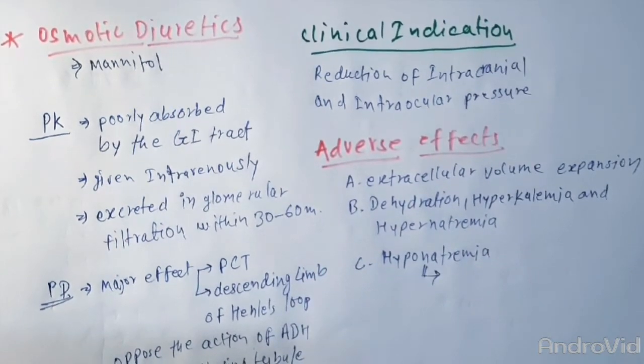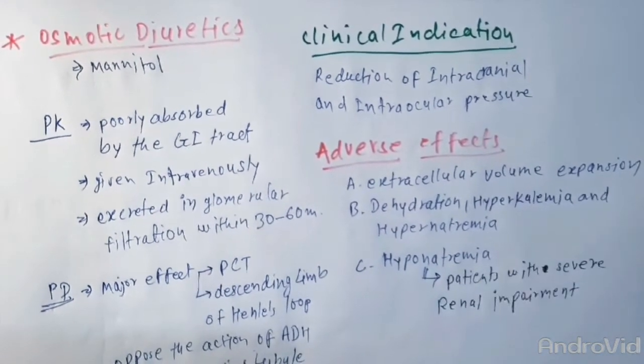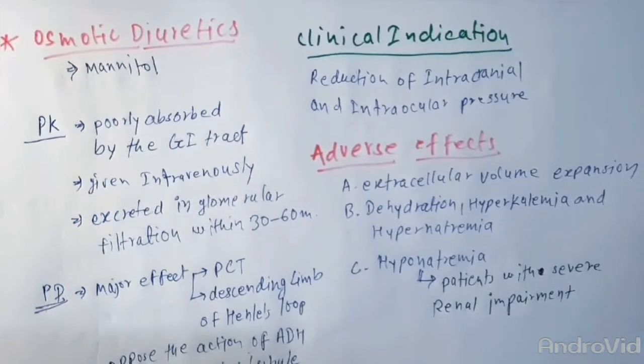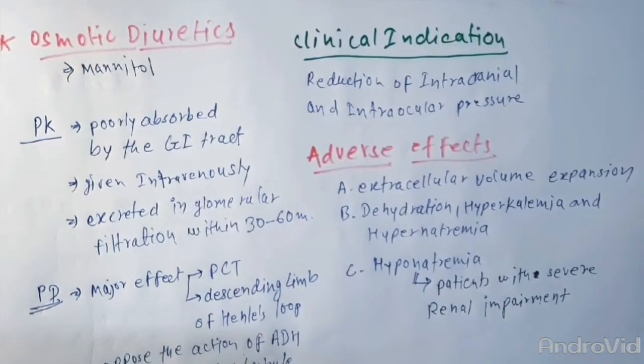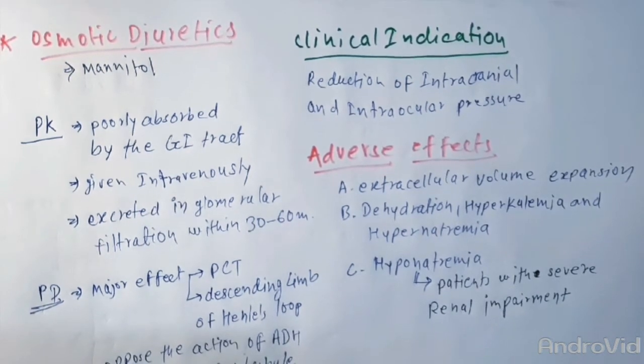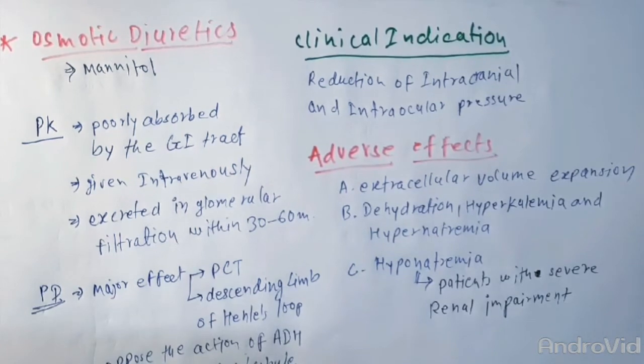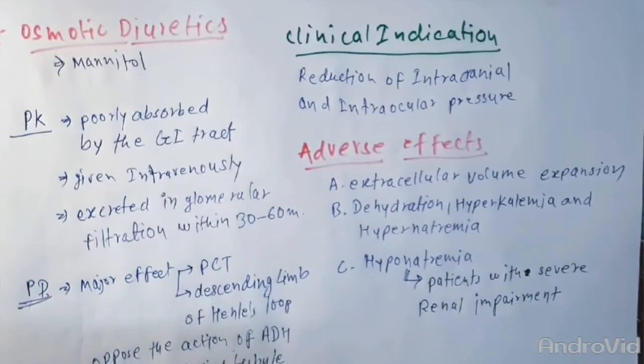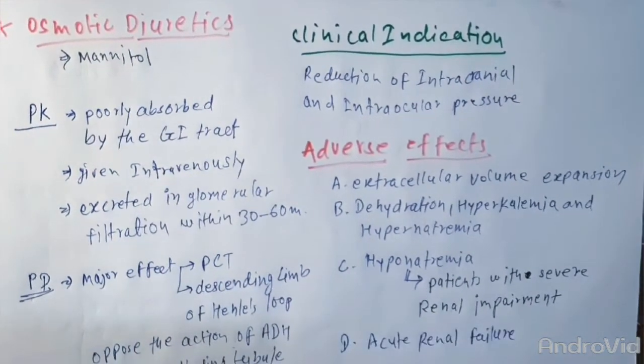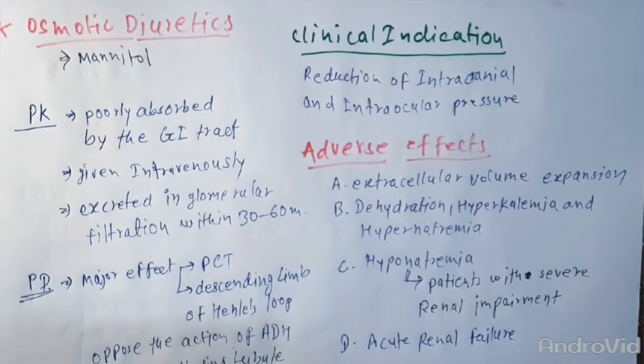They are used in reduction of intracranial and intraocular pressure. Their adverse effects are extracellular volume expansion, dehydration, hyperkalemia, and hypernatremia. They can also lead to hyponatremia when used in patients with severe renal impairment. Intravenously administered mannitol cannot be excreted and is retained in the blood, causing osmotic extraction of water from cells leading to hyponatremia without a decrease in serum osmolality. Acute renal failure has also been reported.